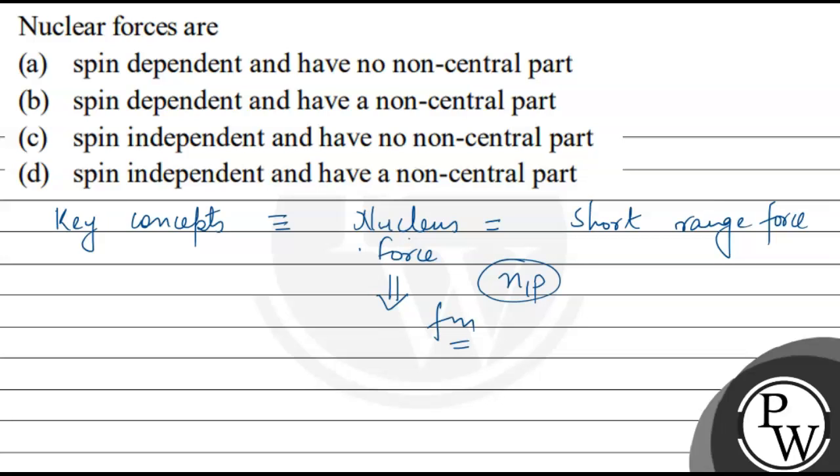The force does not depend on the charge. This means the force will be between proton-proton, neutron-proton, and neutron-neutron. If the nucleus has 12 protons, these protons will have repulsion because they have positive charge and will repel each other.